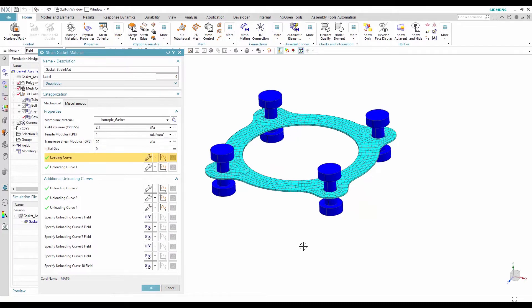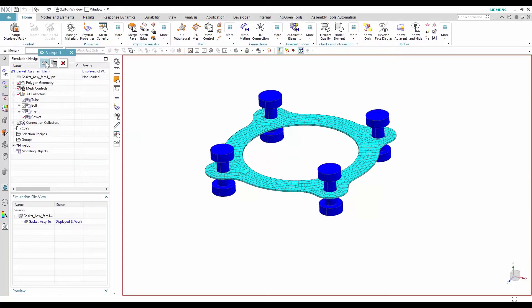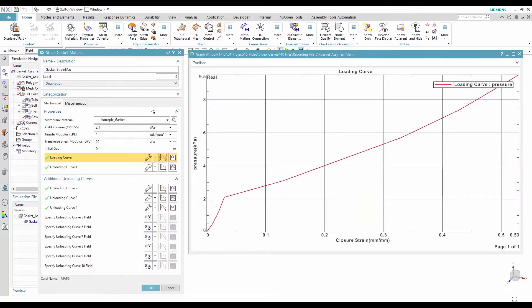The other parameters define the properties of the gasket in compression in the thickness direction. The main properties are the loading and the unloading curves.